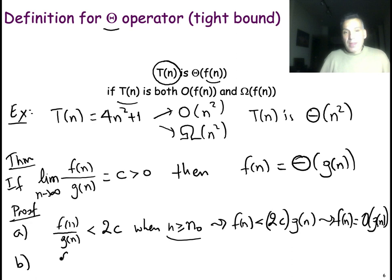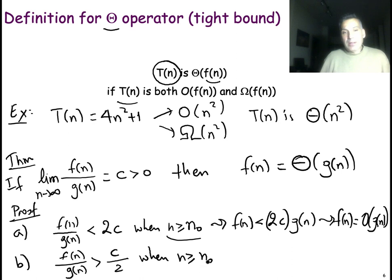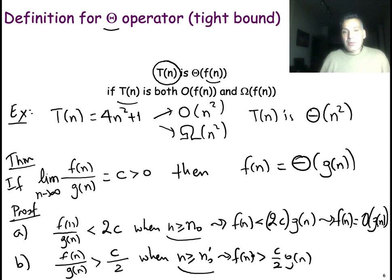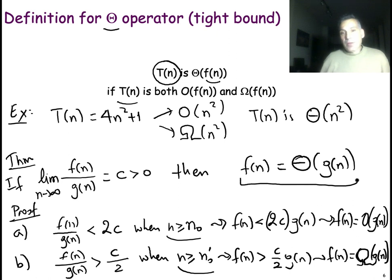Similarly, given that this ratio converges to c, it cannot stay lower than half of c forever. Sooner or later, the ratio will be greater than c over 2, as long as n is greater than or equal to some n0 prime. From this inequality we conclude that f of n is greater than c over 2 times g of n for n greater than n0 prime, which means that f of n is big omega of g of n. Since f of n is both big O and big omega of g of n, by definition f of n is big theta of g of n.